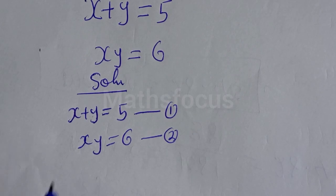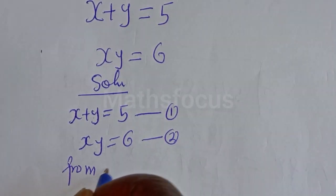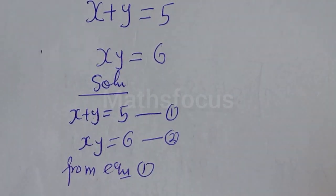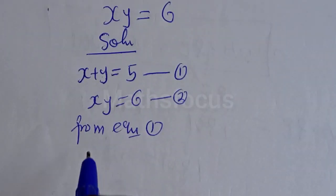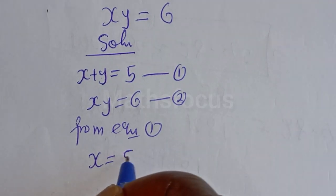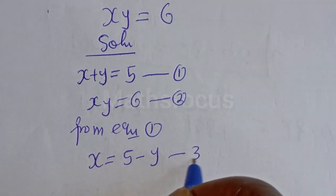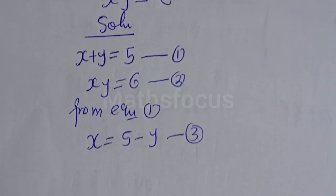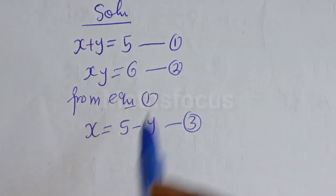Then from equation 1, S is equal to 5 minus Y. Let's call this equation 3. Now we want to substitute equation 3 into equation 2.